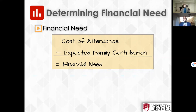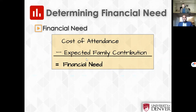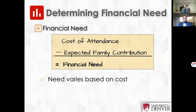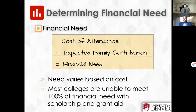Here is a quick calculation showing how we determine financial need: cost of attendance minus the expected family contribution equals your financial need. That's the amount of money schools try to come up with to get you to attend. Keep in mind, need varies based on cost — your need at one school will be different than at another school that costs a different amount. Also, most schools are unable to meet 100% of your need with just scholarships and grants, so loans may need to come into play to fill that gap.